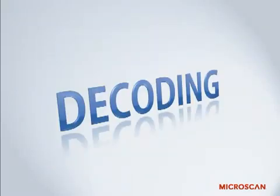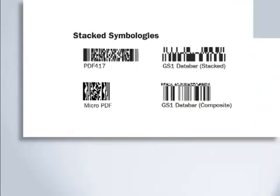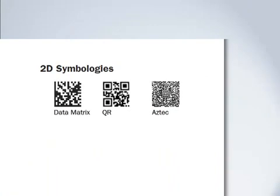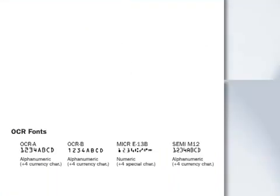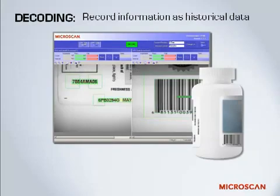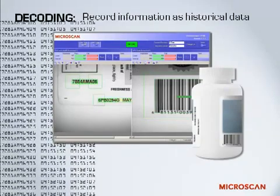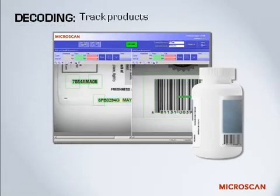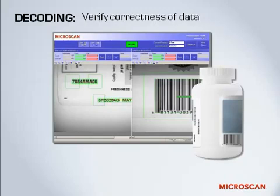Decoding refers to the decoding of 1D and 2D symbologies, such as linear barcodes, stacked symbologies, and 2D symbologies such as data matrix codes. This also refers to OCR, or optical character recognition, which is text that is simultaneously human and machine readable. Decoding is typically used to record information as historical data, so you have a record of parts that have gone through a process. You can track the path a part took through that process, use the data for immediate action, and also validate the data for correctness — verifying that the data in the mark is correct, that the format is correct, or that you have the correct product going down a production line.